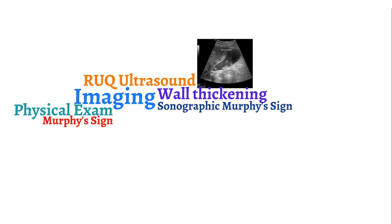It is important to read the ultrasound report carefully. If the radiologist reports overlying bowel gas obscuring the gallbladder and you have a very sick patient, consider emphysematous cholecystitis. The gas noted is actually in the gallbladder due to severe infection.